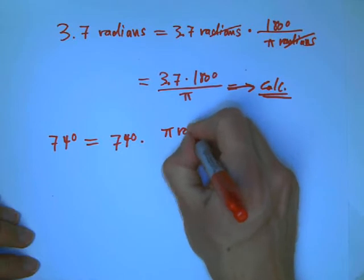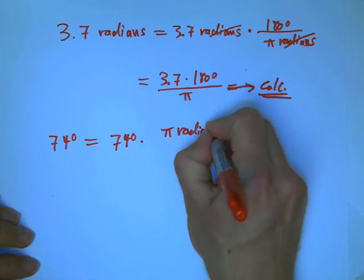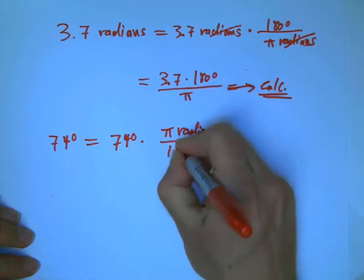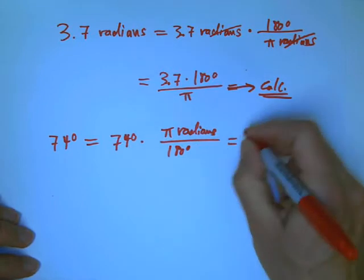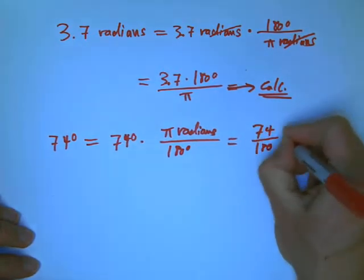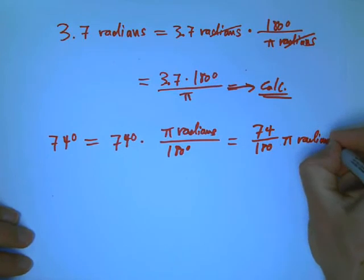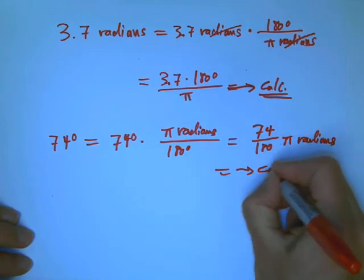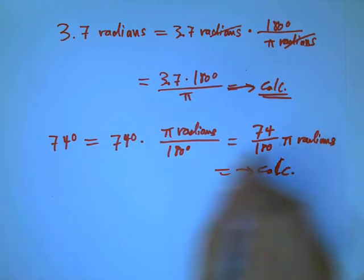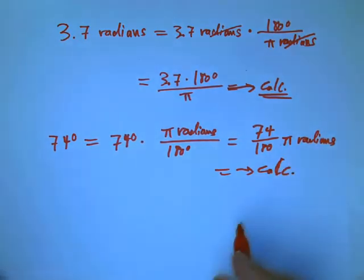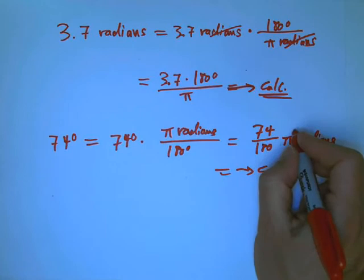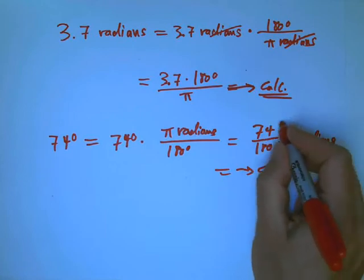But you just go ahead and calculate it out. Similarly, 74 degrees, you just rewrite it and then times π radians over 180 degrees. So 74 over 180 π. And then just go to the calc and get a decimal.